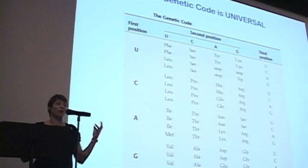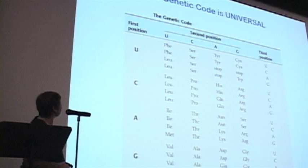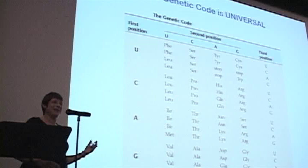But what makes that possible is our genetic code is universal. Every organism on earth, from the lowliest, cutest bacteria up to humans and more advanced creatures, the same three RNA letters will give you the same amino acid when you're making a protein. I find that extremely amazing.